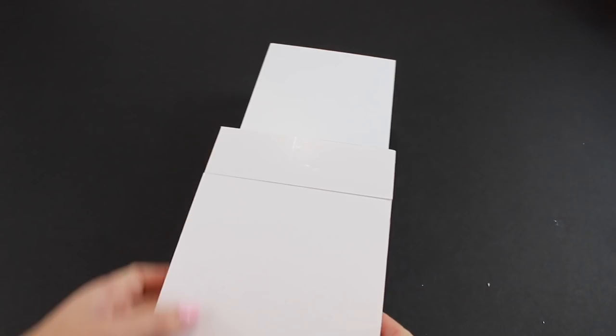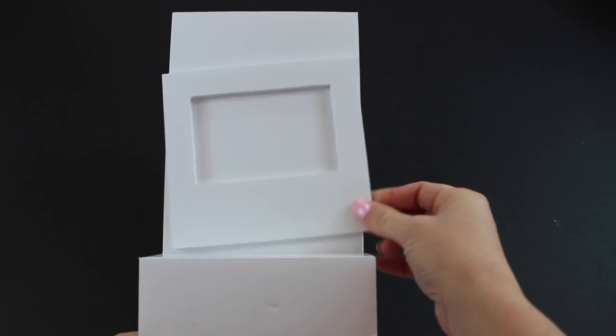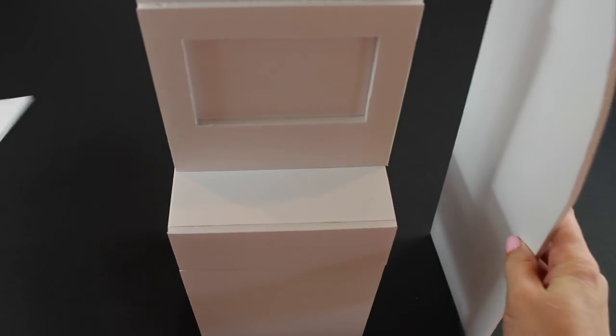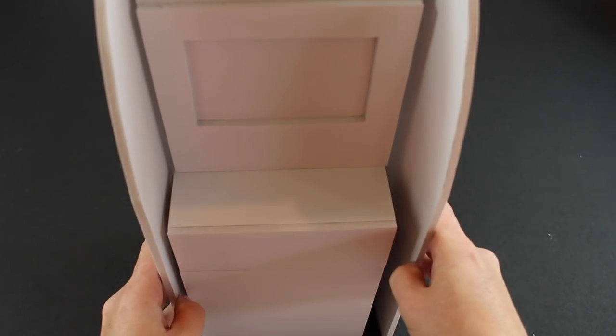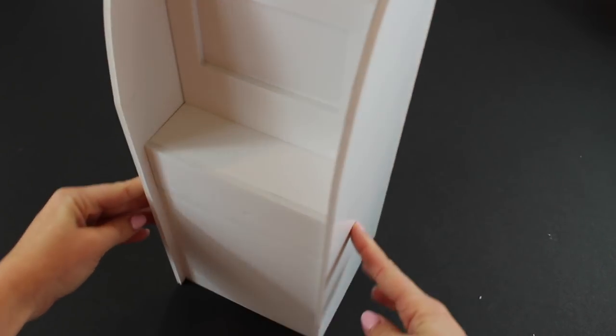Now you can take the ATM screen and glue it right into place. I just have it sitting right on top of the number pad support. And then you can take the two sides of your ATM and glue them to the sides. Now your ATM is completely put together.